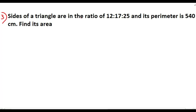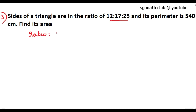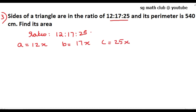The next question: the sides of a triangle are in the ratio 12:17:25 and the perimeter is 540 cm. Find its area. Let the common ratio be x, so we can write a = 12x, b = 17x, and c = 25x.